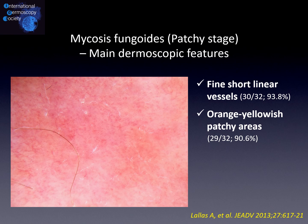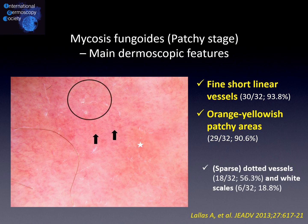According to the main study on dermoscopy of mycosis fungoides in its patch stage, we basically have two main dermoscopic clues. First, fine short-linear vessels, which may be seen in more than 90% of cases and correspond to dilated vessels in the dermis. And second, orange-yellowish patchy areas, which may be appreciated in about 90% of cases and correspond to hemosiderin deposits in the dermis. Additionally, we may have sparse dotted vessels and wide scales, but they are less common and less specific.